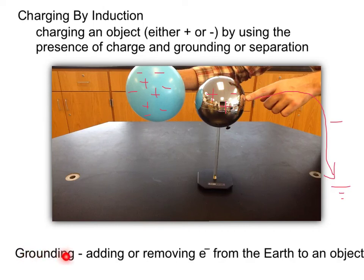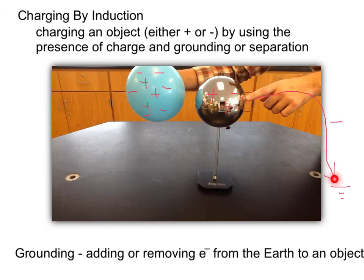Here we use grounding, where we add or remove electrons from the earth to an object or from the object to the earth. In this example, we took some negative charges off of this metal sphere and sent them to ground. Charge is conserved in charging by induction — just because the sphere lost negative charges doesn't mean they are gone; they went to the earth, and thus the total amount of charges before and after charging is constant.